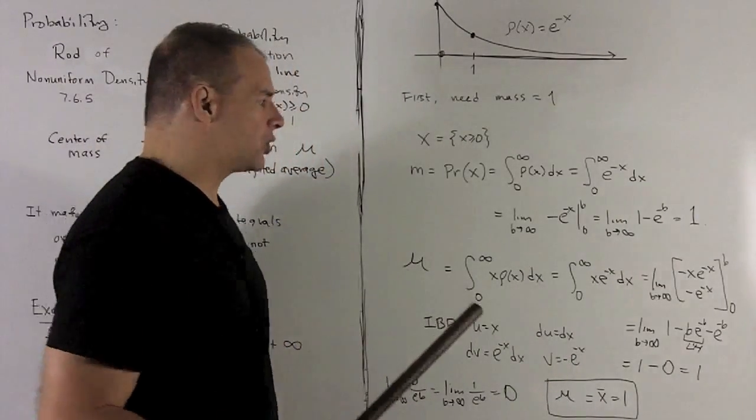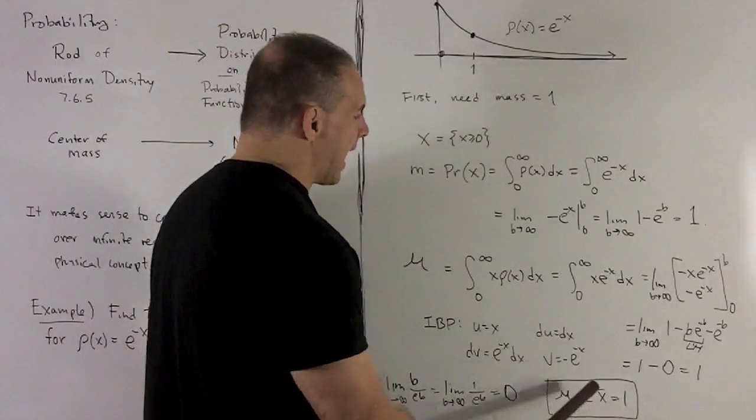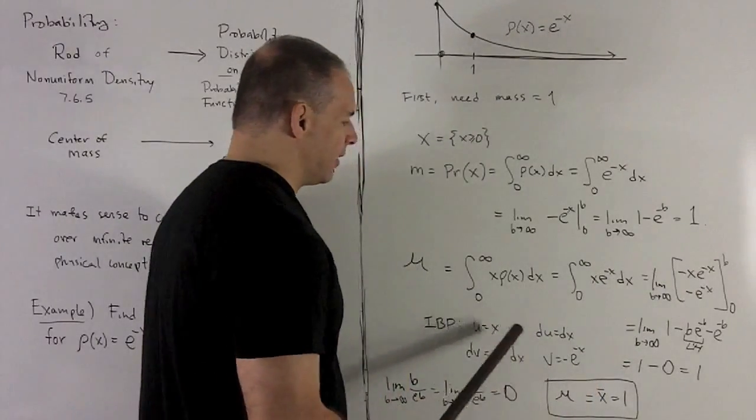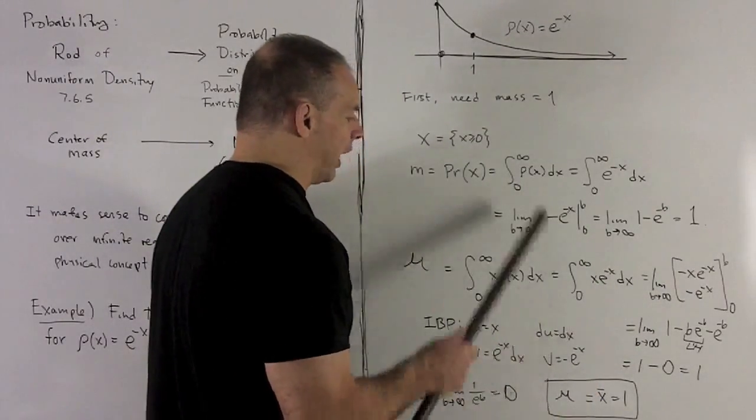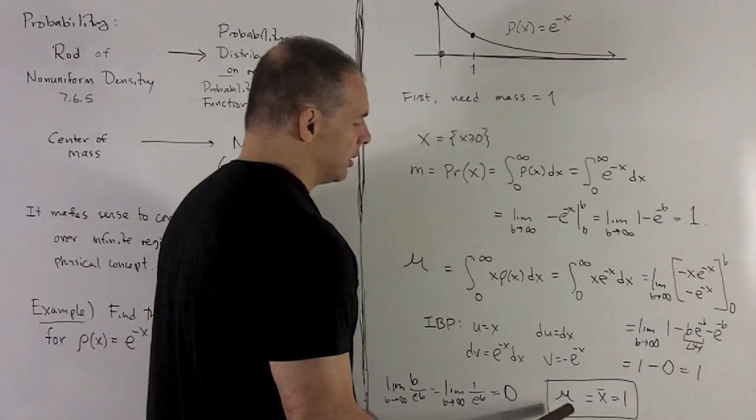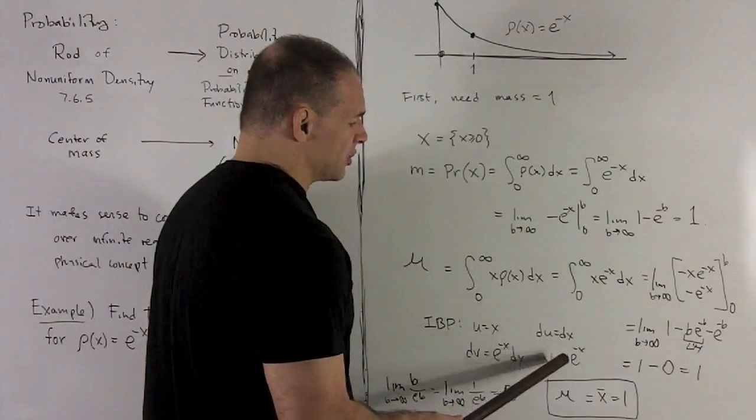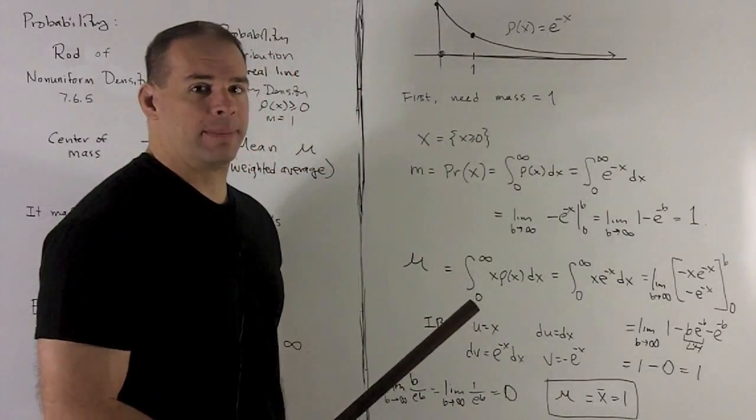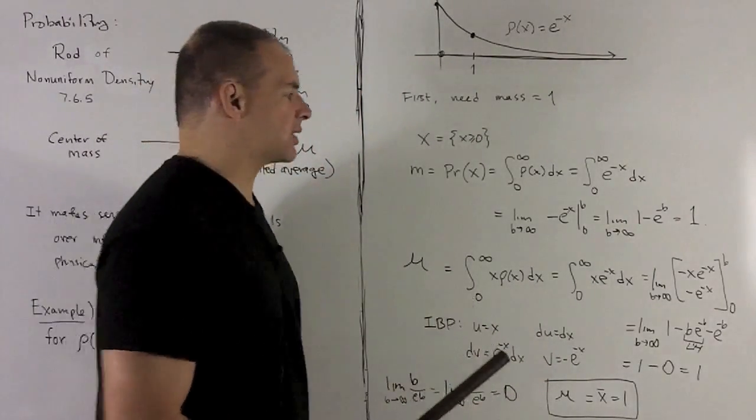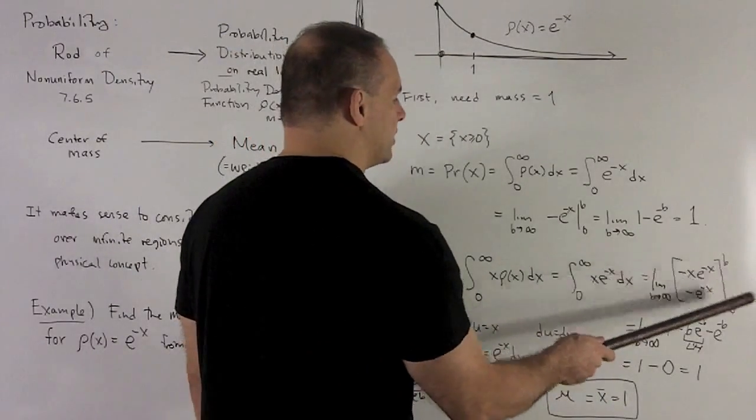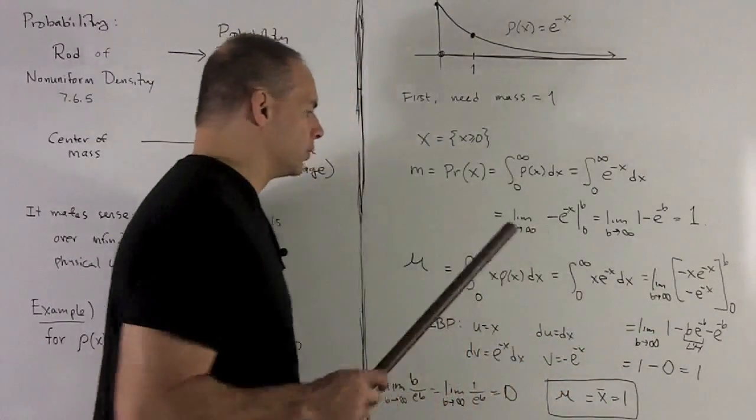And so when I do my integration by parts, what do we do? I go down the diagonal. So that's going to give me the minus x e to the minus x. And I subtract off what I get when I integrate going up the right column. So if I subtract the right column, that's going to be e to the minus x dx. We take the antiderivative of that. That gives me minus e to the minus x. So that's that term there. Then I have to evaluate at b and zero. Take the limit as b goes off to infinity.